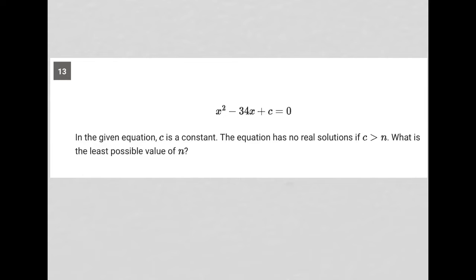This question starts off by providing us with this quadratic equation here, x squared minus 34x plus c is equal to 0. It goes on to say, in the given equation, c is a constant. The equation has no real solution. If c is greater than n, what is the least possible value of n?